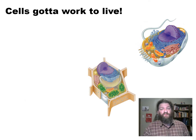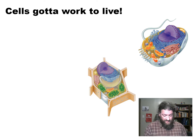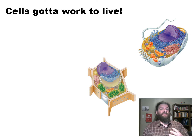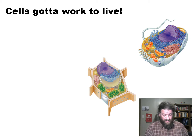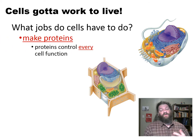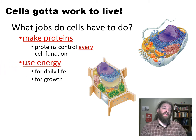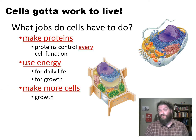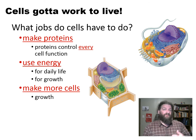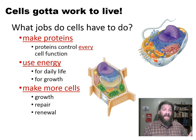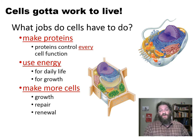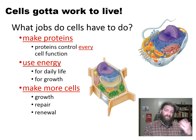To quickly recap what we've been talking about — cells have three big processes that all of the other chemical reactions are kind of supporting. One is making those proteins, the workhorses of the cell, the things that are going to go out and make all of those chemical reactions possible. They also have to have ways to get the energy out of some molecules and transfer that energy into other molecules. And they need to be able to make more cells for genetic immortality, as well as repair and renew multicellular organisms as they get worn out.